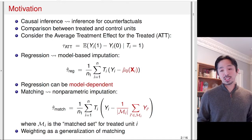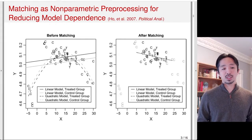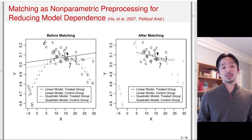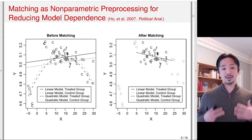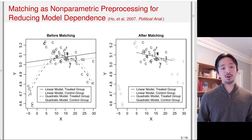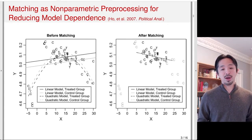We'll also discuss weighting, which is essentially a generalization of matching. First, let's get the intuition established. We can think of matching as a non-parametric preprocessing for reducing model dependence. The idea is that matching allows you to select a set of control units that look like treated units. By making the treatment group and control groups similar to each other with respect to the observed covariates, we can reduce model dependence. This matching is a pre-processing step where you make the treated and control groups similar, and then you could use regression or any other models to estimate causal effects.